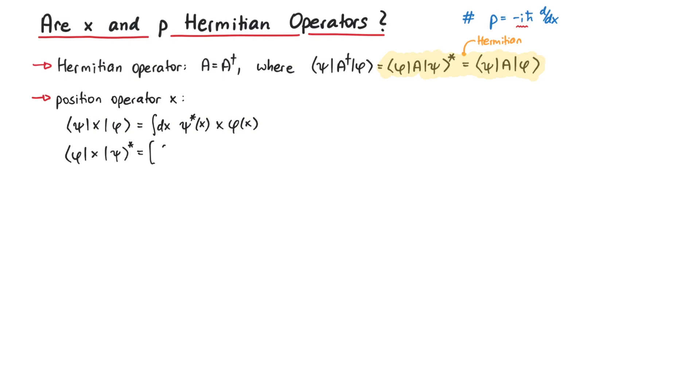For the complex conjugate of phi x psi, we have to perform a complex conjugation on each term. After doing that, we get the same expression again and have thereby verified that the position operator x is a Hermitian operator.